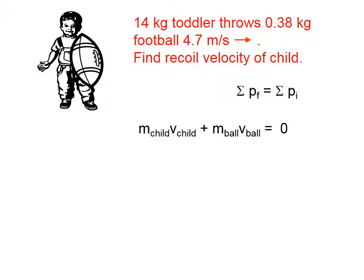Momentum, of course, is mass times velocity. So the momentum of the child will be mass of the child times velocity of the child. The momentum of the ball will be mass of the ball times velocity of the ball. And the sum of those, we need to put a plus sign there.